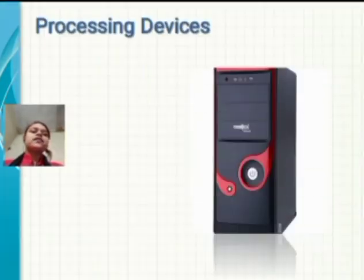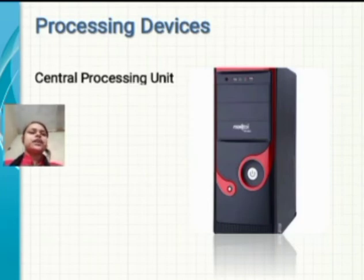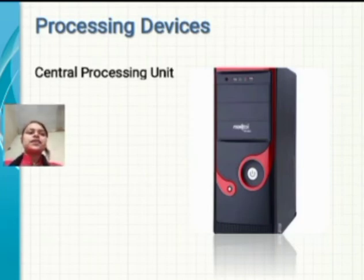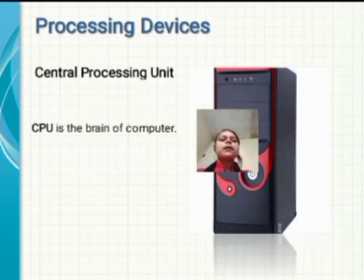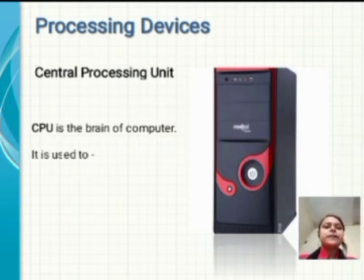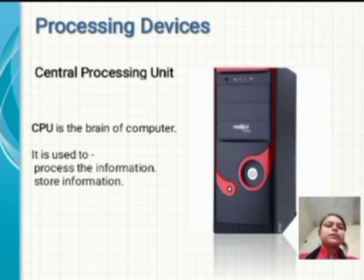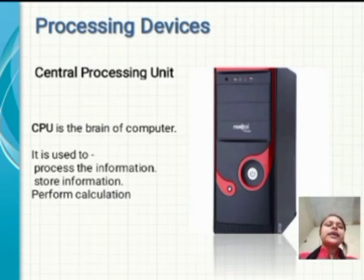What is a processing device? A CPU is a processing device. CPU stands for central processing unit. CPU is the brain of the computer. It is used to process information, store information, perform calculations, and send results to the output device.